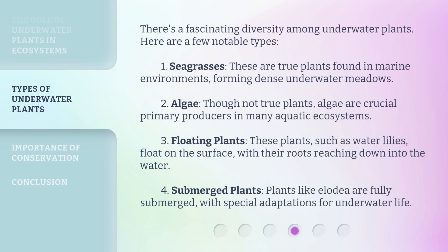There's a fascinating diversity among underwater plants. Here are a few notable types. First, seagrasses — these are true plants found in marine environments, forming dense underwater meadows. Second, algae — though not true plants, algae are crucial primary producers in many aquatic ecosystems.